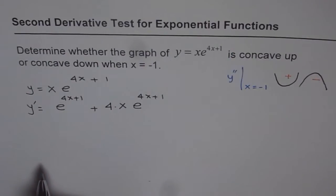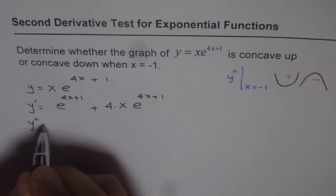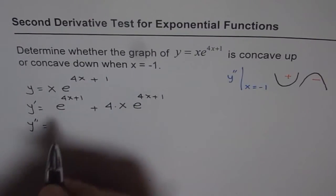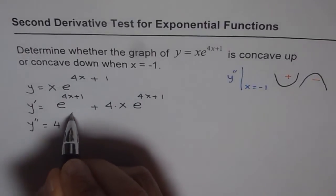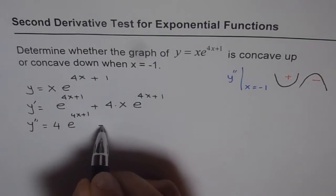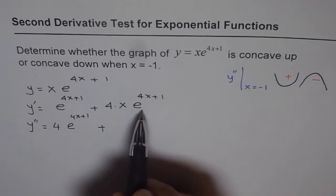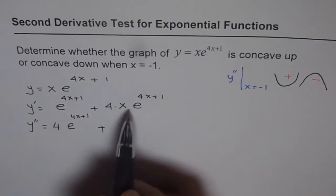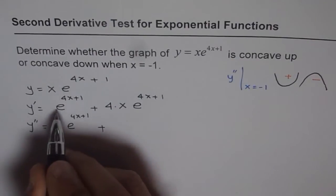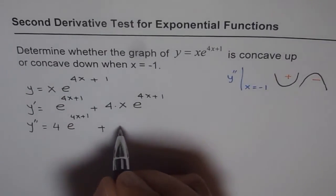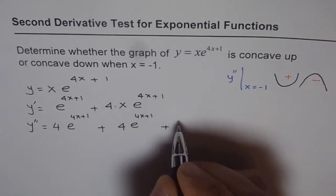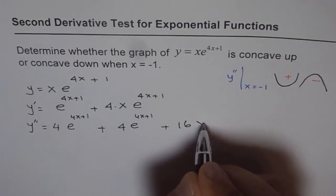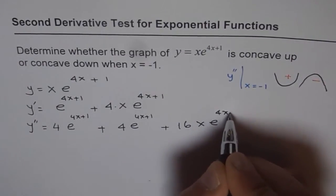Now let's find the second derivative. The derivative of the first term gives 4 e to the power of 4x plus 1. The derivative of the second term 4x times e to the power of 4x plus 1 requires the product rule again, and multiplying through by 4 gives us 4 e to the power of 4x plus 1 plus 16x times e to the power of 4x plus 1.